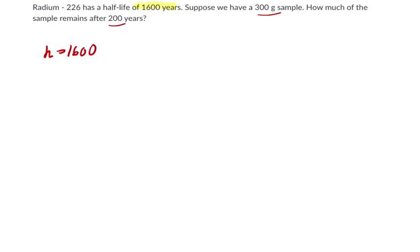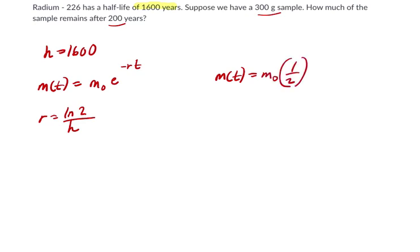Okay, so we could use a base of E. We'll try that. So M of T equals the starting mass times E to the negative RT. And remember that R is the natural log of 2 over H. We'll try that approach. And also you can model this using a base of a half. So the starting mass times 1 half to the power of T over H.